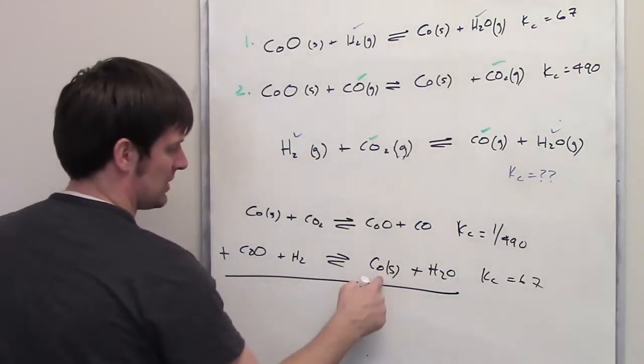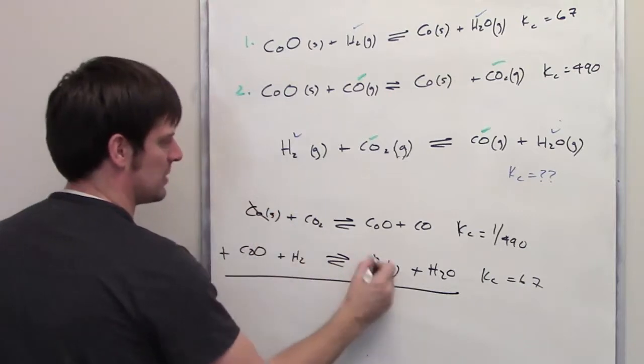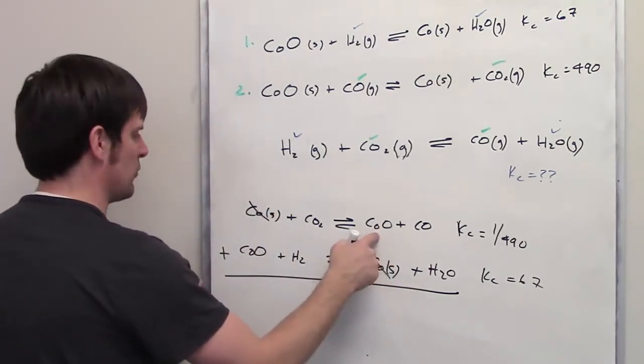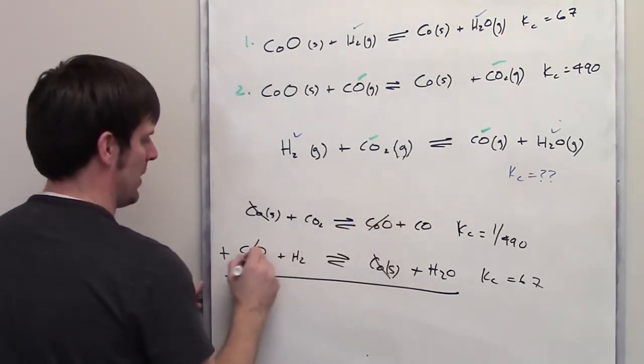Here we've got cobalt solid on the right side of the second equation. On the left side of the first, algebraically they cancel each other out. I've also got cobalt oxide on the right side of the first equation. On the left side of the second, they also cancel each other out algebraically.